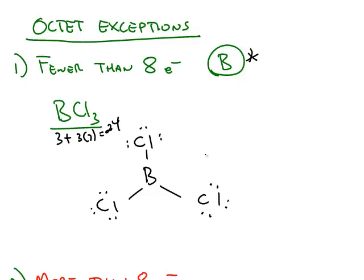However, we're going to see later on that that Lewis structure doesn't match the reality, that this is a much better picture. And when we do formal charges we'll be able to calculate why that is. But boron is the one exception that would exist like this with less than eight, it only has six electrons around it.